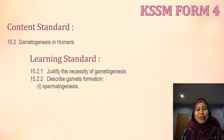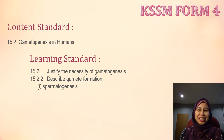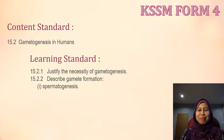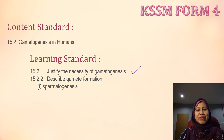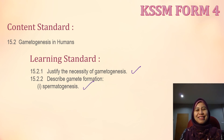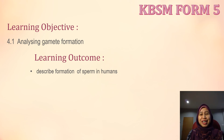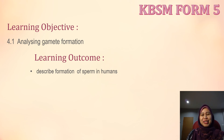For KSSM Form 4, the content standard for today's lesson is 15.2, that is Gametogenesis in Humans. The learning standards are 15.2.1 — justify the necessity of Gametogenesis — and 15.2.2 — describe gamet formation under Spermatogenesis. For KBSM Form 5, the learning objective is 4.1, analyzing gamet formation, and the learning outcome is to describe the formation of sperm in humans.